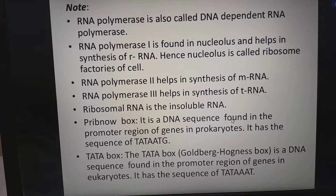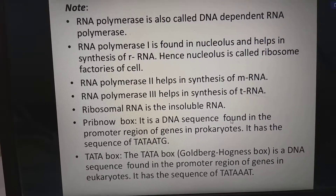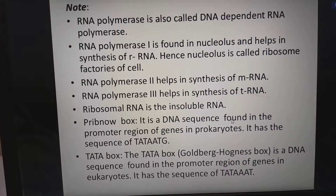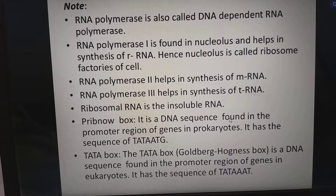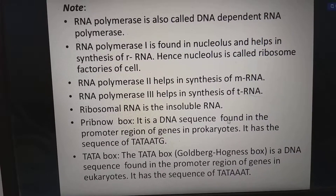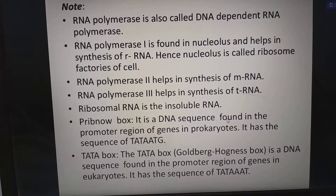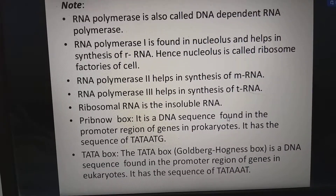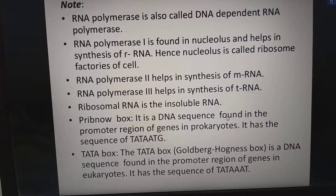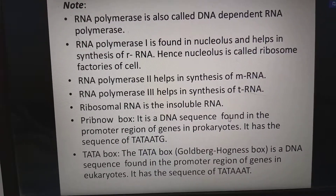Ribosomal RNA is an insoluble RNA. The Pribnow box is a DNA sequence found in the promoter region of genes in prokaryotes. It has a sequence of TATAATG. The TATA box, also called the Goldberg-Hogness box, is a DNA sequence found in the promoter region of genes in eukaryotes. It has a sequence of TATAAT.